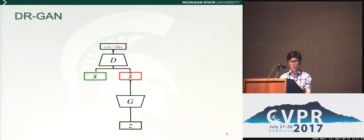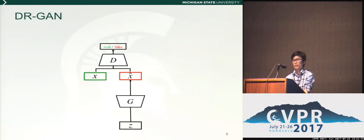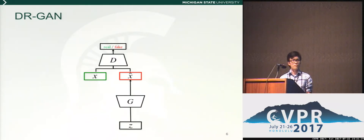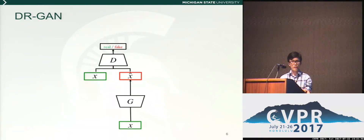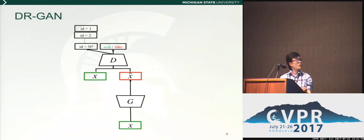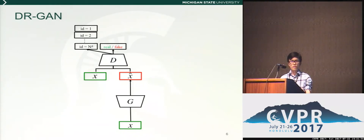Our IDEA GAN is built upon a generative adversarial network, which is formulated as a minimax game between a generator and discriminator. The IDEA GAN differs from conventional GANs in multiple ways. First of all, instead of taking noise as input, it takes a face image as input. Also, the IDEA GAN adds an identity classification task for the discriminator, so that the generated image will preserve the identity.